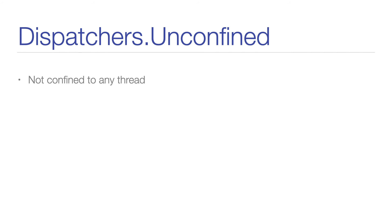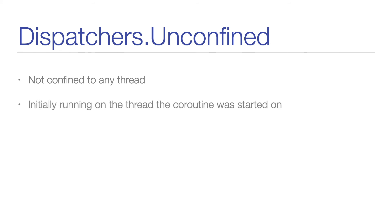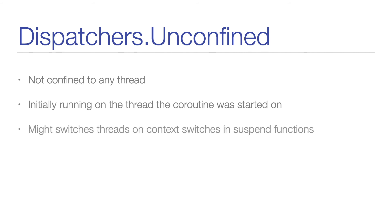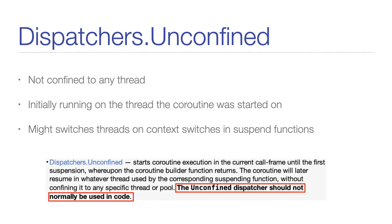The last one of the four predefined coroutine dispatchers is Dispatchers.Unconfined. As the name says, this dispatcher is not confined to any thread. Coroutines started with this dispatcher are initially running in the thread they were started in, and they might switch threads if there is some context switch in any of the suspend functions that the coroutine is calling. The official documentation says that the unconfined dispatcher shouldn't normally be used in code, so we won't spend any more time on it.